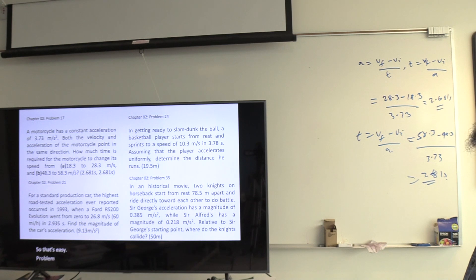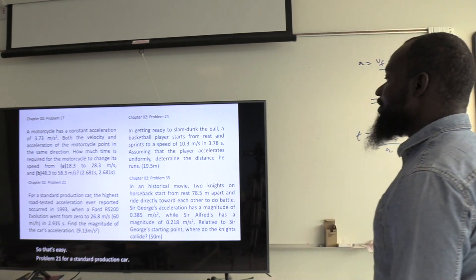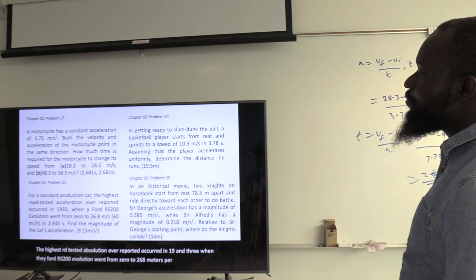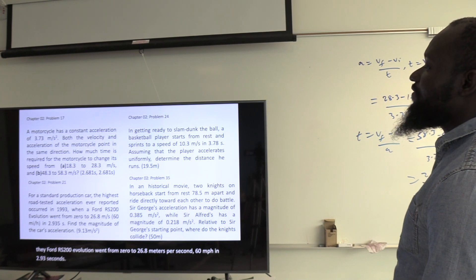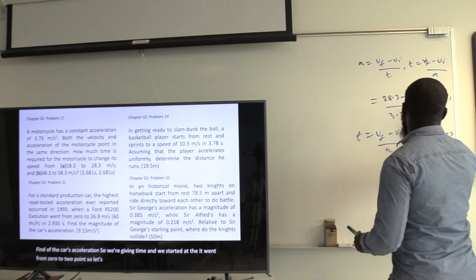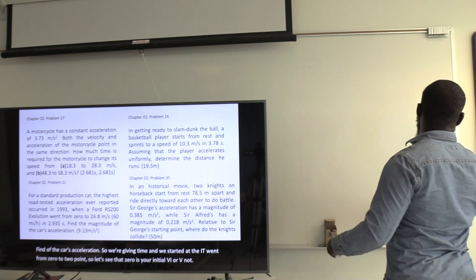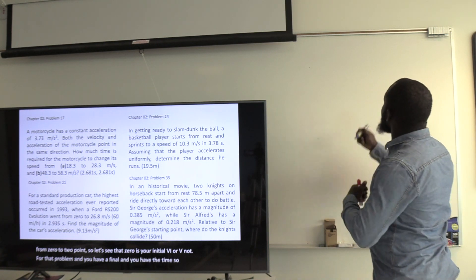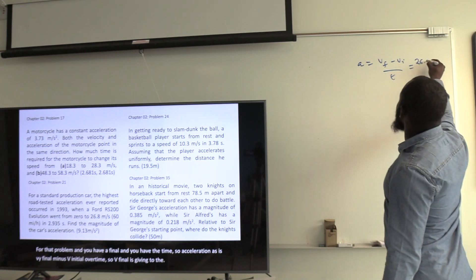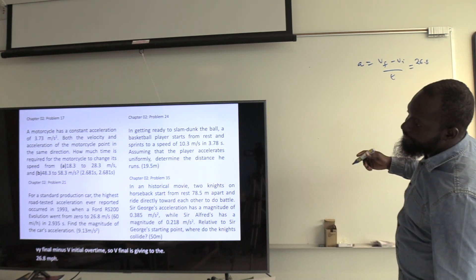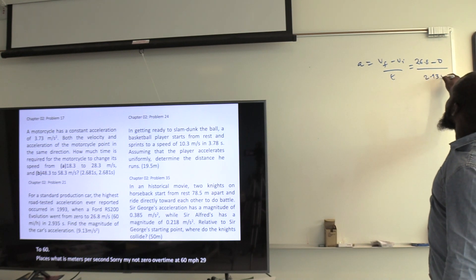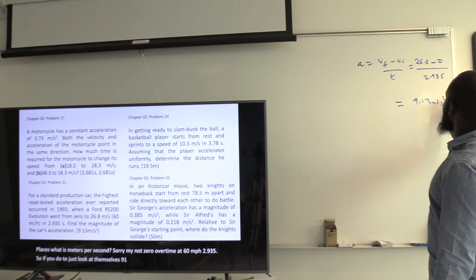Problem 21: In 1993 the Ford RS-200 Evolution went from 0 to 26.8 m/s in 2.93 seconds. Find the magnitude of acceleration. Acceleration = (V_final − V_initial) / t = (26.8 − 0) / 2.93 = 9.13 meters per second squared.